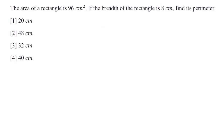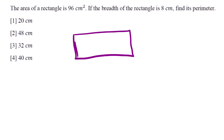The question says: the area of a rectangle is 96 centimeters squared. If the breadth of the rectangle is 8 centimeters, find its perimeter. Looking at the picture form of this, we have a rectangle with an area of 96 centimeters squared and the breadth is 8 centimeters. You should know that even though you take this as the breadth, the answer will still be the same whichever side you take as breadth.